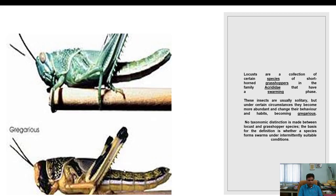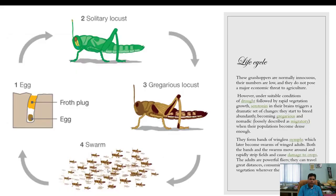There is no taxonomical distinction between the solitary and gregarious phase — it is a single species. Under favorable conditions, the solitary phase becomes the gregarious phase. The favorable condition for locusts is drought followed by rapid vegetation growth. A chemical called serotonin in the brain triggers a dramatic set of changes.